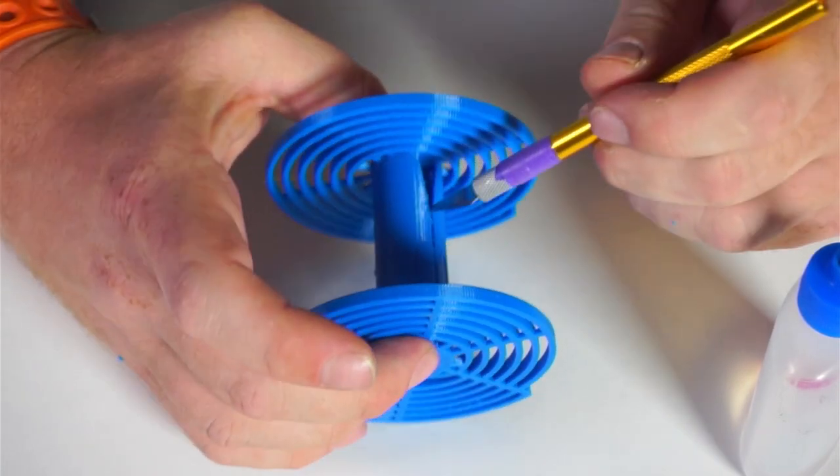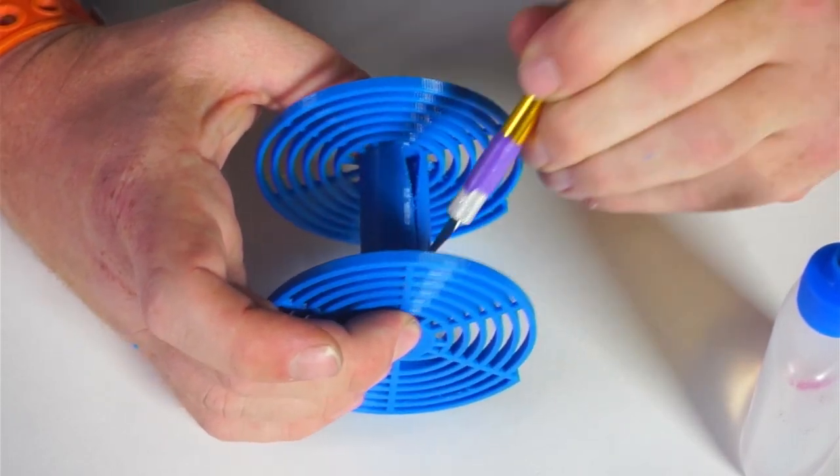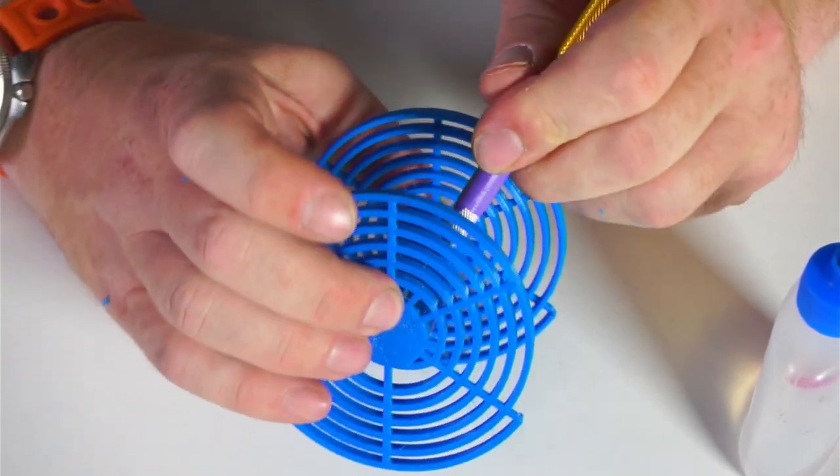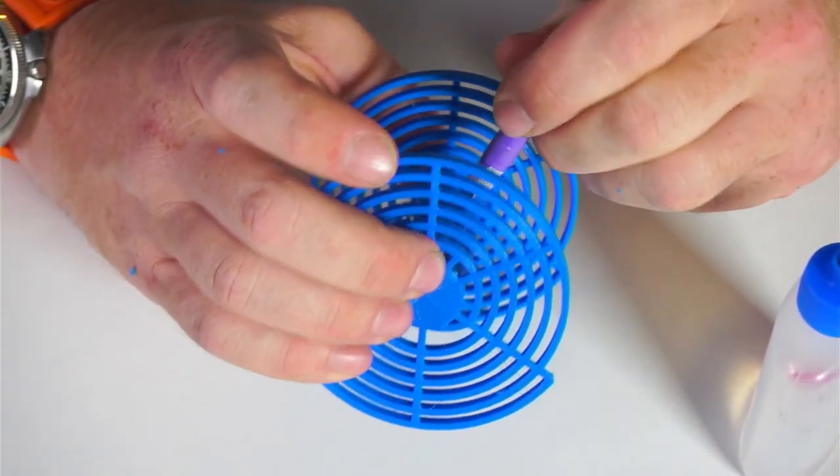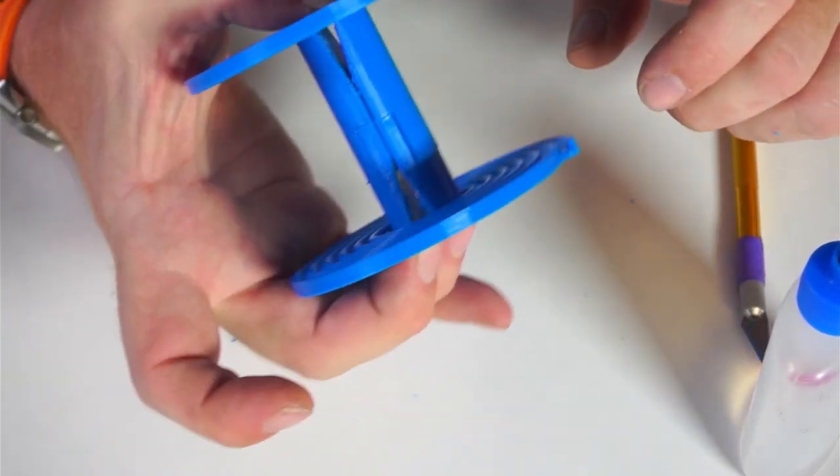I'm trying to do this upside down and backwards here for the camera. Run your razor through just once or twice to make sure that you haven't glued the two halves together. It should be very tight. Sprung clip. And there you have it.